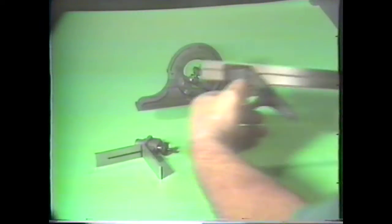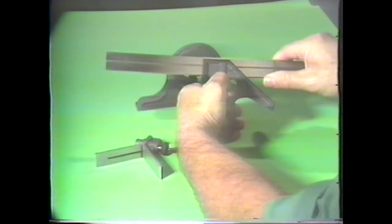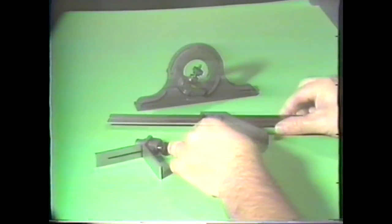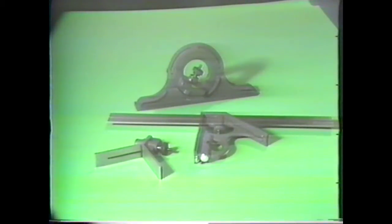Another measuring tool which incorporates the steel rule in its use is the combination set. This tool combines the steel rule with a square head, a protractor, and a center head.